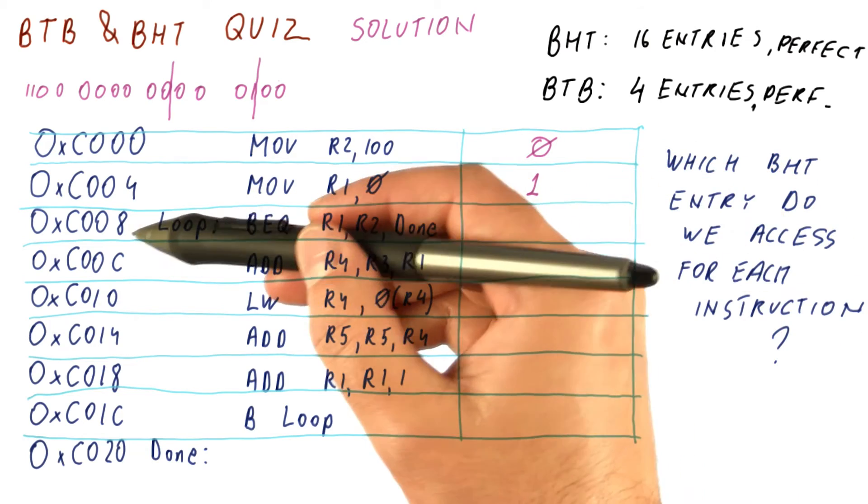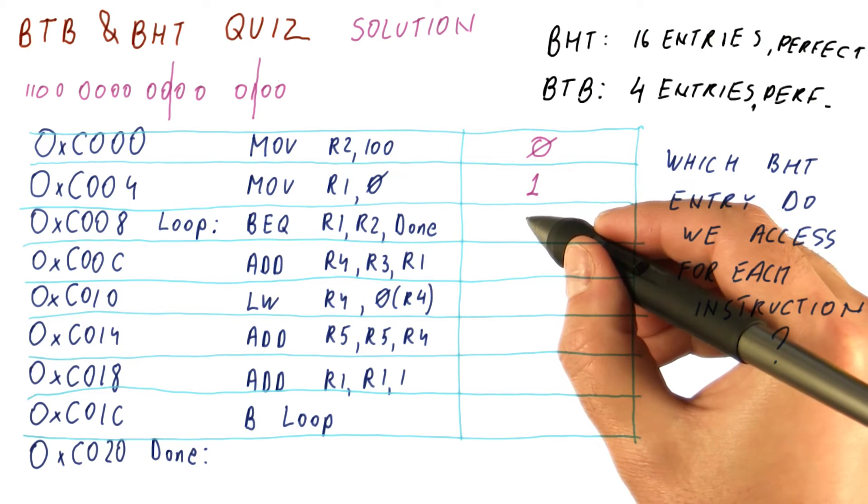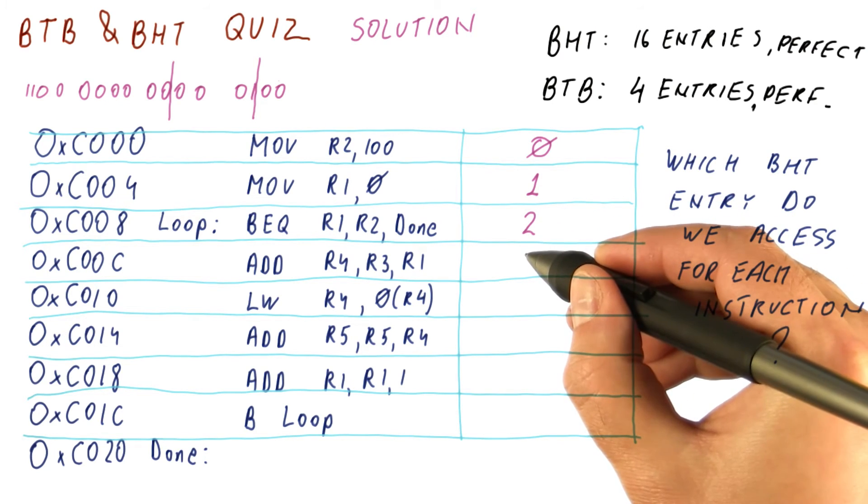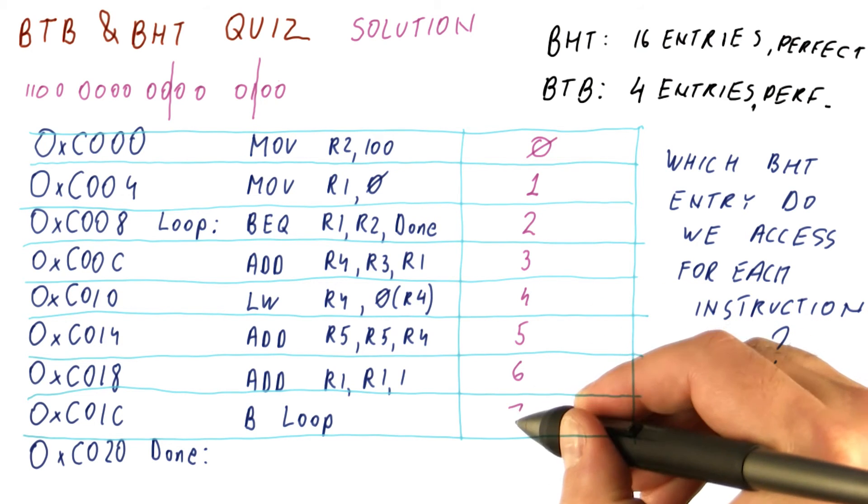Now you can tell that for instruction eight here, this is going to be one, zero. So we're going to access the BHT entry number two, three, four, five, six, and seven.